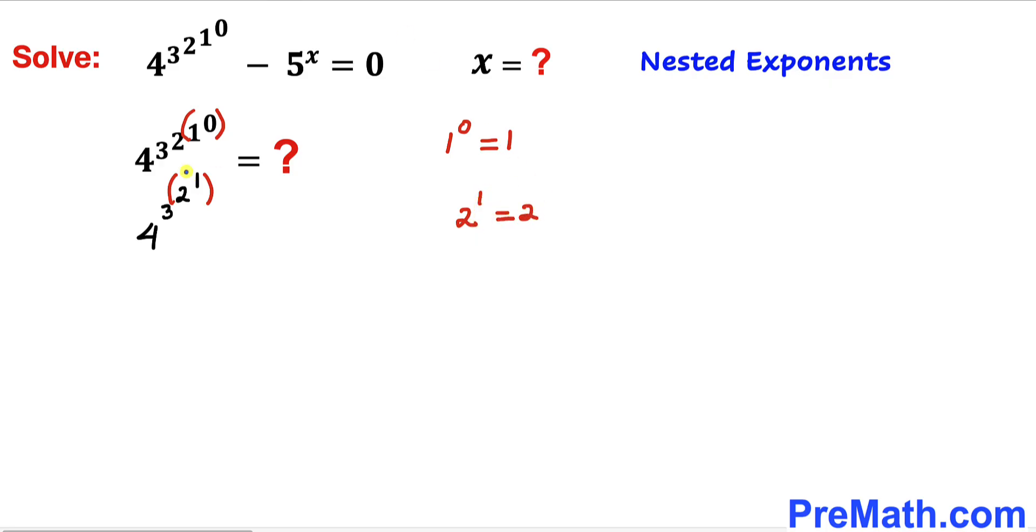So therefore this could be written as 4^(3^2). And now let's focus on 3^2, and we know 3^2 is same as 9.